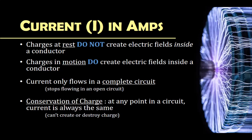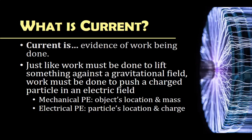Conservation of charge: at any point in a circuit, the current is always going to be the same. You can't create or destroy charge — it's always going to be there somewhere within the circuit. Current is evidence of work being done. Just like work must be done to lift something against a gravitational field, work must be done to push a charged particle in an electric field. In electric potential energy, we're talking about the particle's location and its charge. We use test charges — tiny positive charges — and we look at the movement of them or the force applied on them, and Coulomb's law applies to those forces placed in that field.